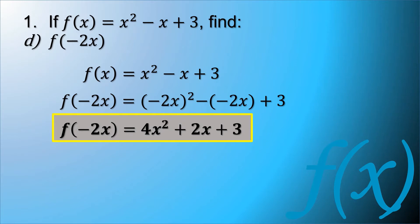that results to function of negative 2x is 4x squared plus 2x plus 3. We can't combine anything here because we can't combine x squared with x and with another constant 3. So this is our final answer.